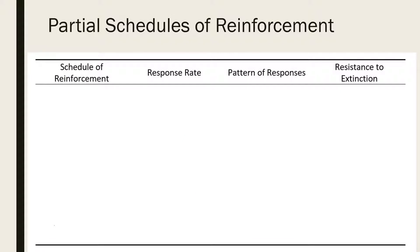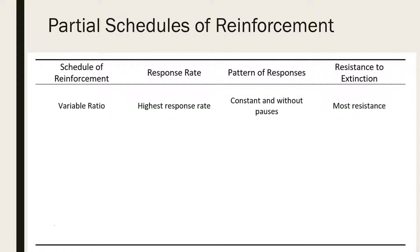Each of the four partial schedules of reinforcement produce different rates of response and level of resistance to extinction. Variable ratio schedules support a high and steady rate of response and thus is the most resistant to extinction. The power of this schedule of reinforcement is illustrated by the gambler who persistently inserts coins and pulls the handle of a one-armed bandit.